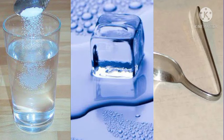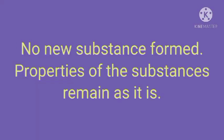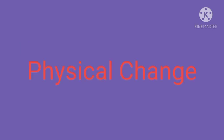Now look at these examples: adding sugar to water, melting of ice, or bending of a metal spoon. Is there any formation of a new substance? No. In these types of changes, no new substance is formed and the properties of the substance remain as they are. For example, melting ice produces water with nearly the same properties. Such changes are called physical changes, and we can also reverse them.